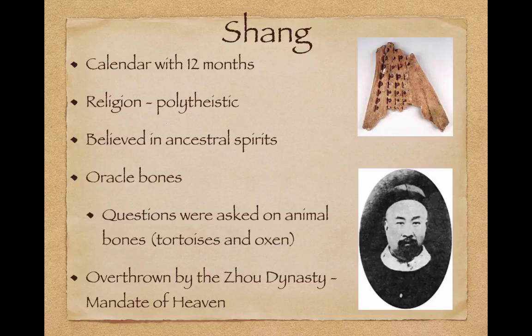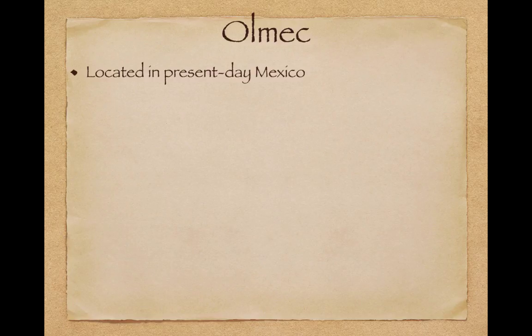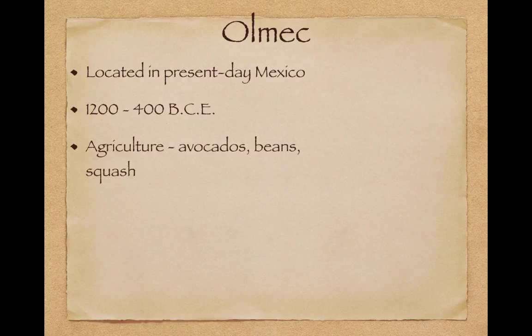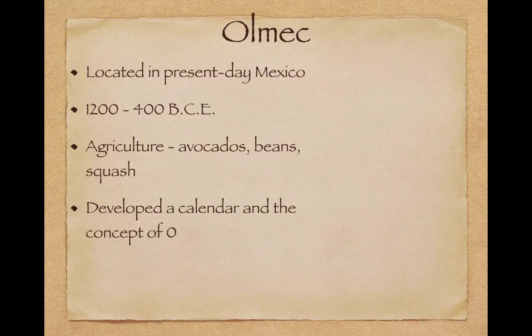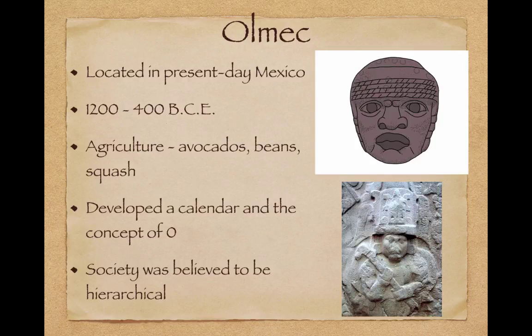The Shang would be overthrown by the Zhou Dynasty using the Mandate of Heaven, which influenced China for many years to come. The Olmec are located in present-day Mexico from 1200 to 400 BCE. They were heavily focused on agriculture — avocados, beans, squash. They developed a calendar and the concept of zero. Society was believed to be hierarchical, and they created enormous stone heads weighing thousands of pounds, believed to be representations of different rulers.